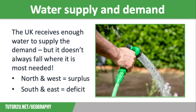The UK receives enough water to supply the demand, but it doesn't always fall where it is most needed. The north and west of the UK has a water surplus where supply exceeds demand, with high rainfall, lower evaporation rates, and plenty of potential reservoir sites. These areas have a relatively low population density, whereas the south and east of the country has a water deficit where demand exceeds supply. This is the most densely populated part of the country and it has the lowest annual rainfall.